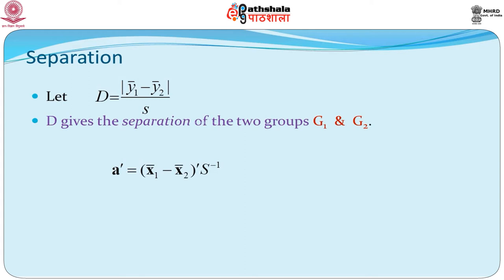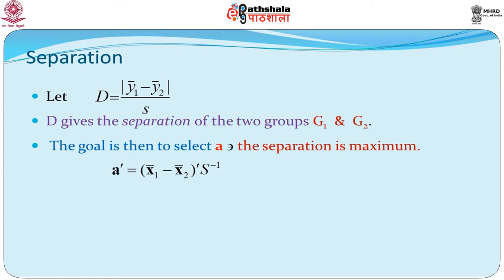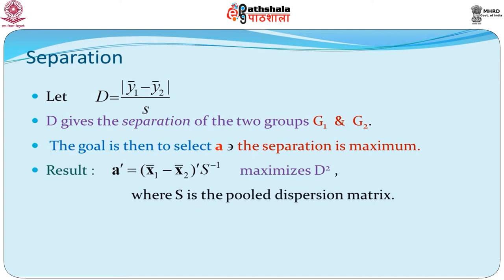Fisher decides that d can be a good marker for differentiating between the two groups. The goal is then to select an a which makes the separation maximum. We want to separate the two groups as far as possible — we make the difference between y1-bar and y2-bar large. To do that we want to select an a which will give us the linear combinations y1-bar, y2-bar, which will make this large. The result that Fisher arrived at was that a' = (x1-bar − x2-bar)' S⁻¹. This is the combination a which maximizes d². Remember S is the pooled dispersion matrix, so this is a normed difference between the means of the two groups.